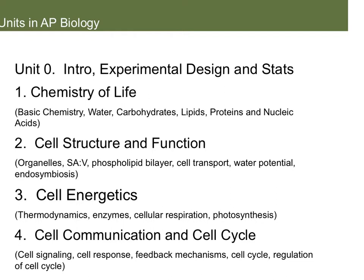There are nine units total. Unit zero, which is what we're going to start off with, is just an introduction to what biology is, properties of life, how to design an experiment correctly using the appropriate terms, and then we're going to do some introductory statistics. If you had AP stats or regular stats, you are good to go for that portion of this class.